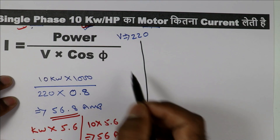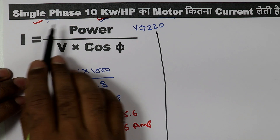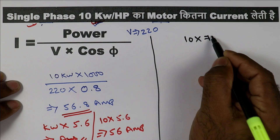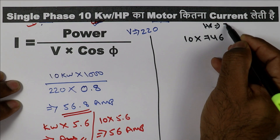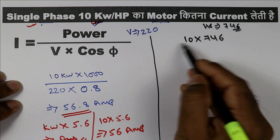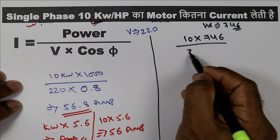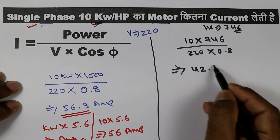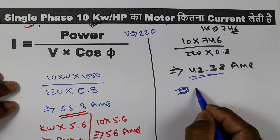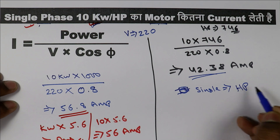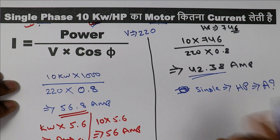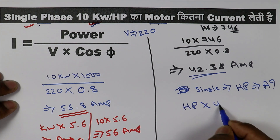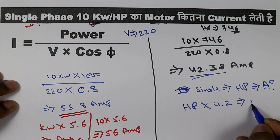Now for a 10 horsepower single-phase motor, we use the same single-phase formula. Multiply 10 by 746 to convert horsepower to watts, divide by voltage (220V), and multiply by power factor (0.8). When we solve this, we get 42.38 ampere. That is the current rating of a 10 HP single-phase motor.